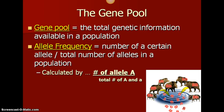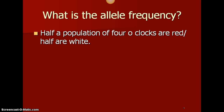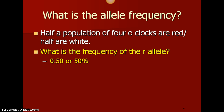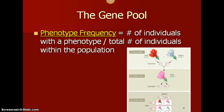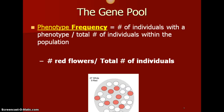You're basically looking at a proportion. For example, half a population of four clocks are red and half are white — the frequency of the little r allele would be 0.5, or 50%. Phenotype frequency is the number of individuals with a particular phenotype divided by the total number of individuals in the population. Looking at that picture, you have red and white, and combined you get pink — that's our F2 generation. For phenotype frequency, the number of red flowers is 9 divided by the total number of flowers, which is 36, giving 25% of the population showing red.